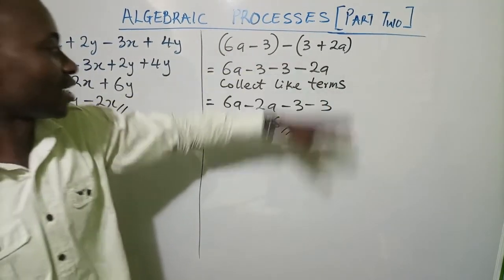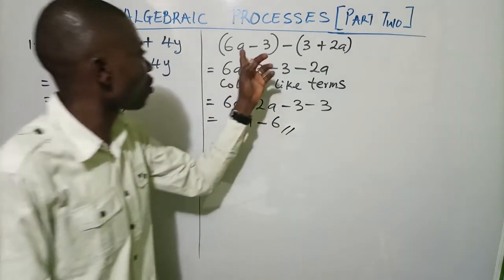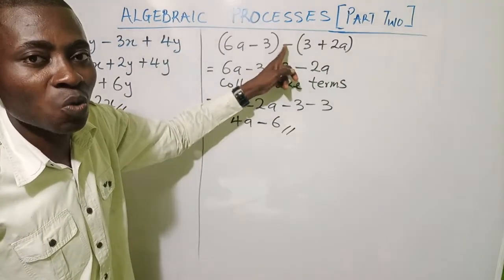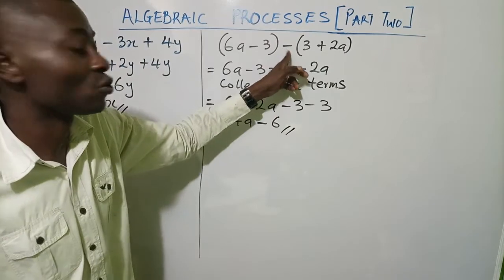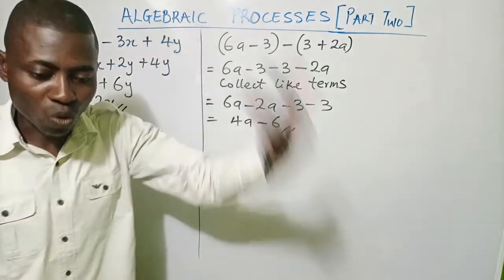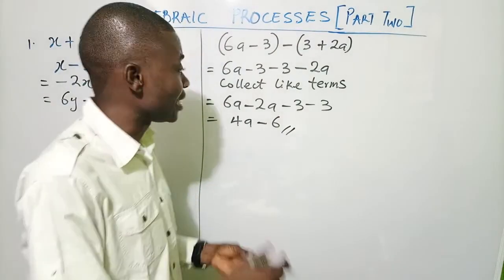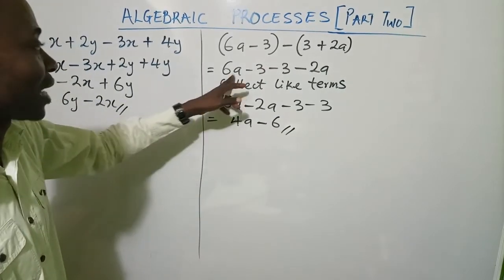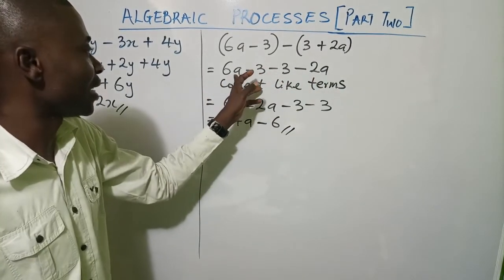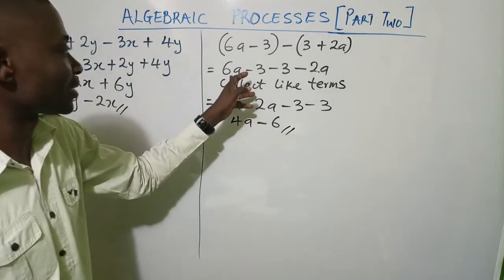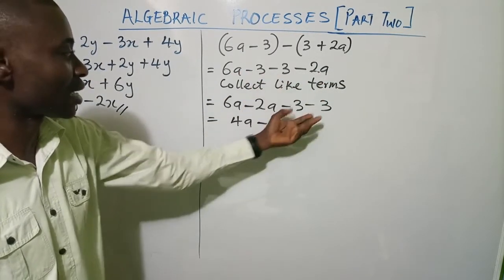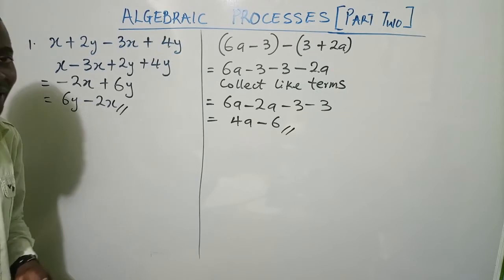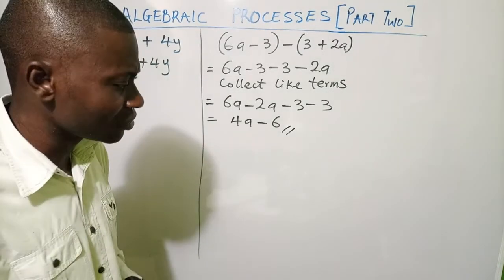It's not difficult. The main point here is opening the bracket — always remember that you use what is outside the bracket to multiply everything inside the bracket. After that you collect like terms, looking out for those that are common. This term carries 'a' and that term carries 'a', so those two are like terms. The constants have no letter, so they go together.